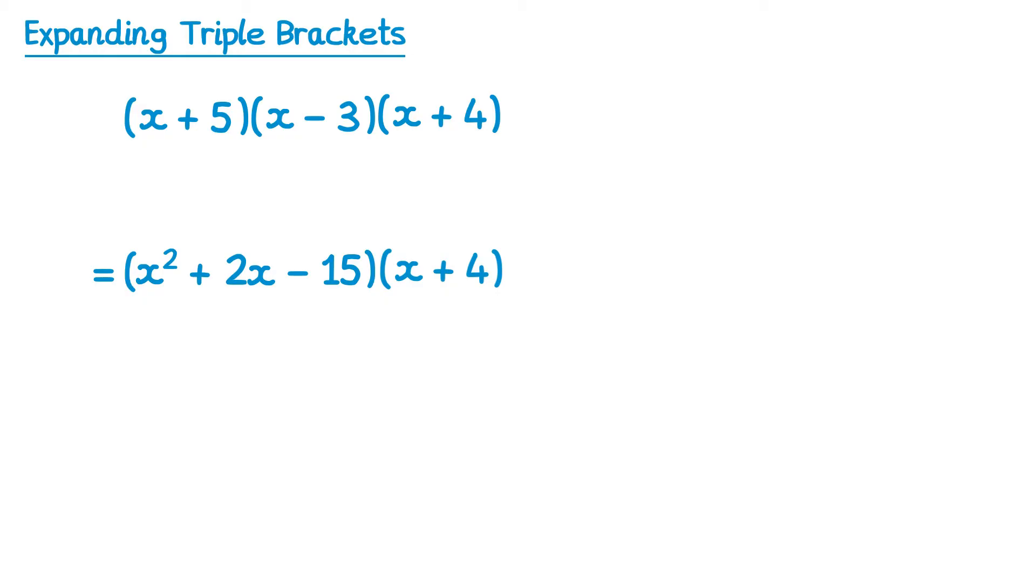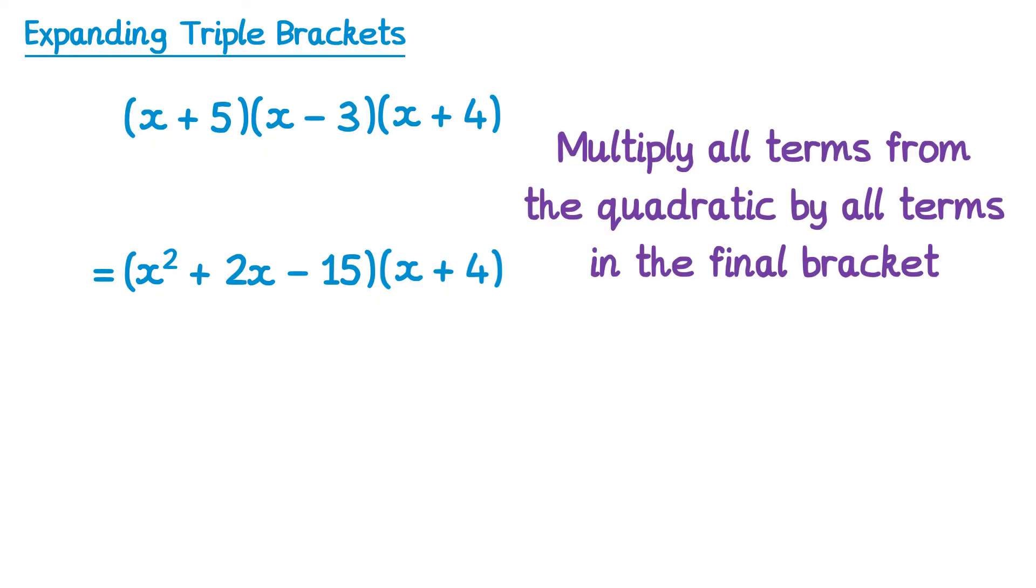What we now have is a quadratic in the first bracket, and then a normal bracket for the last bracket. The way to approach this is to multiply all terms from the quadratic by all terms in the final bracket. In the quadratic there are 3 terms, and in the final bracket there are 2 terms. So altogether we're going to do 6 multiplications, since 3 times 2 gives 6.